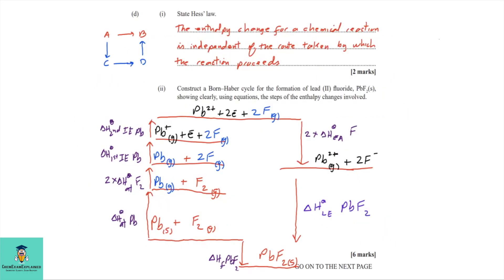We are now looking at 1D Part 1 — state Hess's Law. Before stating the law, let's have a basic understanding. If we have a reactant A and a product B, the enthalpy change for that reaction is the same as if you take an alternate route going from A to C, C to D, D to B. So Hess's Law states that the enthalpy change for a chemical reaction is independent of the route taken by which the reaction proceeds.